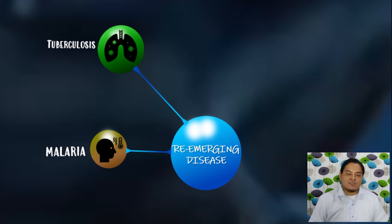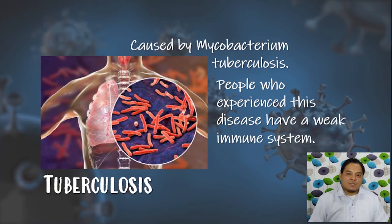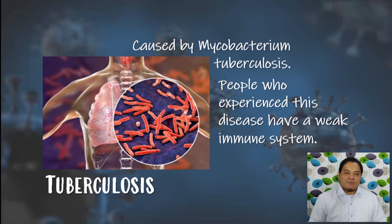2. Tuberculosis — this is caused by Mycobacterium tuberculosis. People who experience this disease have a weak immune system. This disease became prevalent in many countries during early times, killing many lives. In our country now, TB can be easily cured because the government already has a program called DOTS for those people suffering from this kind of disease. Although the number of TB cases has declined, there is always a possibility of outbreak depending on the contributory factors of re-emergence.